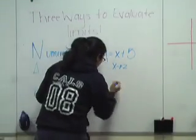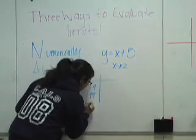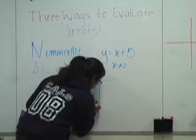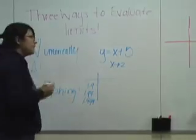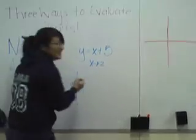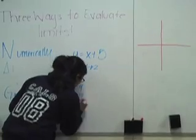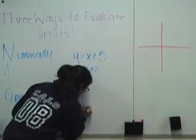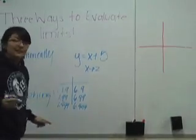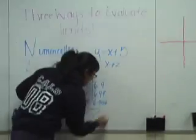Okay, so in this case, we're going to choose 1.9, 1.99, and 1.999. When you put them into the calculator, you get 6.9, 6.99, and 6.999. So, as you can see, if you keep putting numbers close to 2, you get 7.